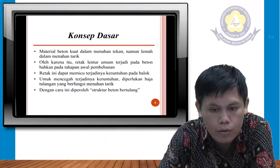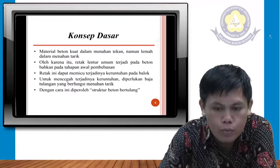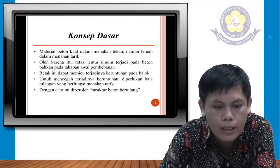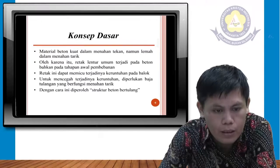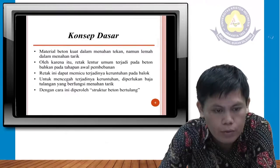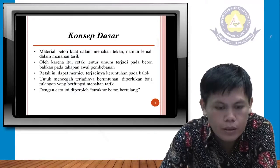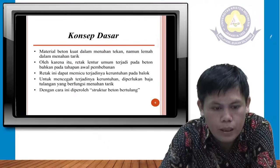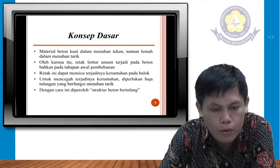Kita tahu bahwa beton itu kuat terhadap tekan tapi lemah terhadap tarik, sehingga untuk mengantisipasi hal tersebut maka dipasang tulangan pada balok. Retak lentur umum terjadi pada beton bahkan pada tahapan awal pembebanan, dan retak ini dapat memicu terjadinya keruntuhan pada balok. Dengan pemasangan tulangan inilah maka kita memperoleh beton bertulang.